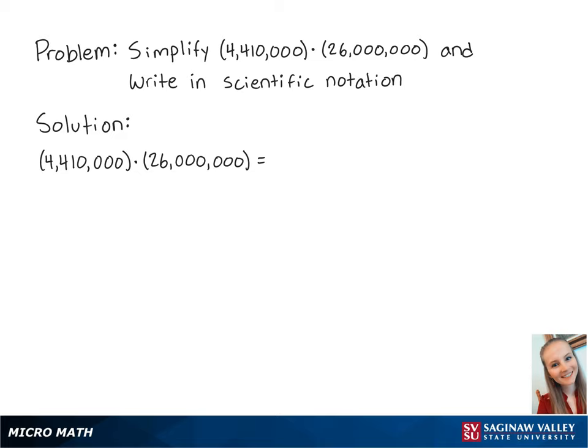First, we're going to rewrite the numbers in scientific notation. The first number is equal to 4.41 times 10 to the 6th, and the second number is equal to 2.6 times 10 to the 7th.